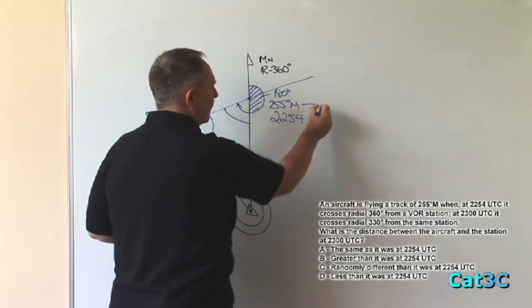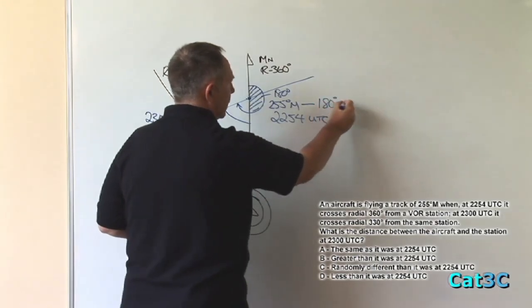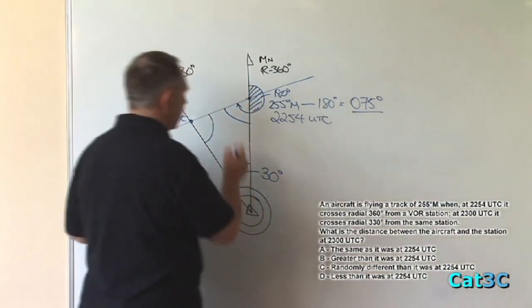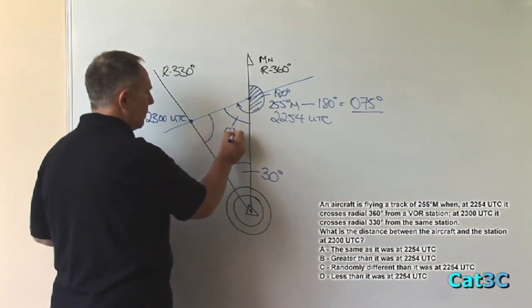So 255 minus 180 equals 075 degrees. So this portion here is 075 degrees.